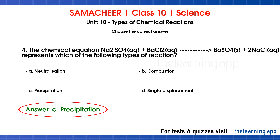In a precipitation reaction, 2 aqueous solutions combine to form 1 insoluble salt and 1 soluble compound. The insoluble compound formed is called a precipitate. BaSO4 is the insoluble precipitate formed here, while 2NaCl is the soluble compound. That is why this reaction is called a precipitation reaction.